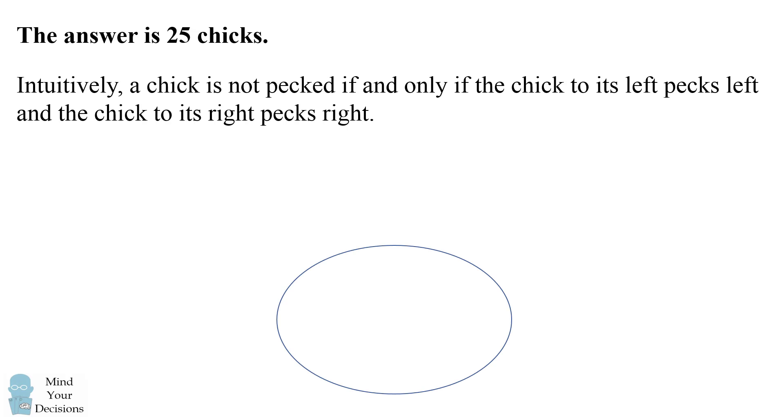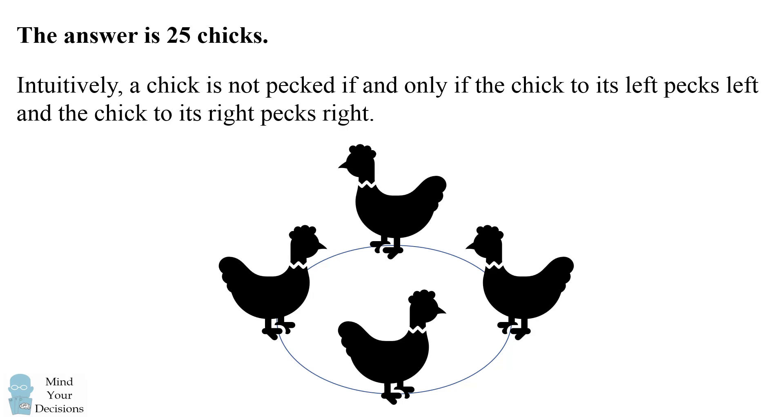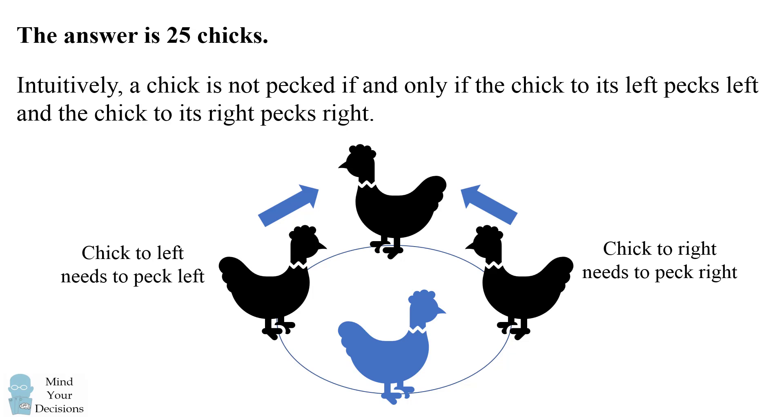I will illustrate this in a simple example of four chicks around a circle. Focus on the chick in the bottom of this circle. In order that this chick is not pecked, we need the chick to its left to peck left, and we need the chick to its right to peck right.